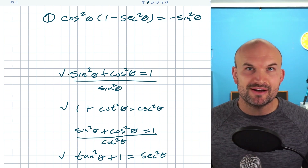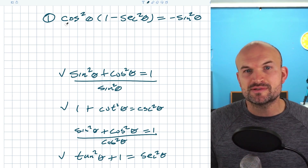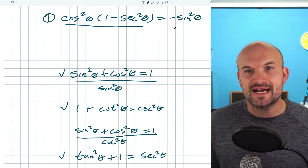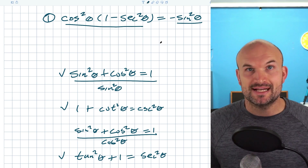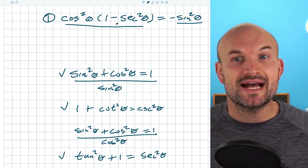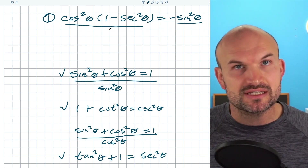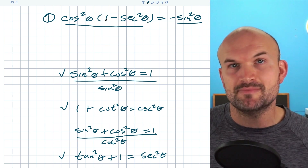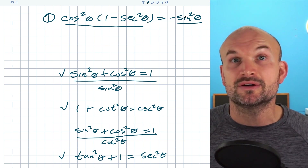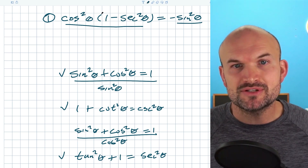Because remember, when we're trying to verify an identity, all we're simply trying to do is make the left-hand side equal to the right-hand side. Basically, what we're going to do is simplify one side so it looks like the other. You can see here this left-hand side is much more complicated than the right-hand side, so that's what I'm going to focus on.